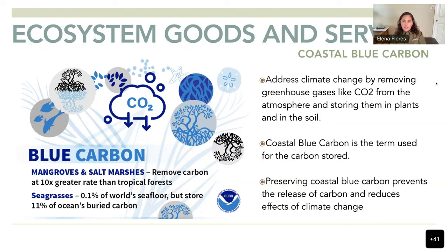They help us address climate change by removing greenhouse gases like carbon dioxide from the atmosphere. Salt marshes and seagrasses are also a huge part of blue carbon. It is well known that mangroves and salt marshes can remove 10 times more carbon dioxide from the atmosphere than a tropical forest. And even though seagrasses cover only 0.1 percent of the world's seafloor, they store 11 percent of the ocean's organic carbon.